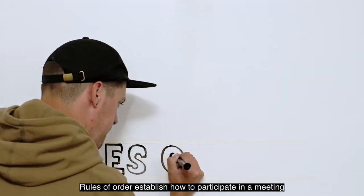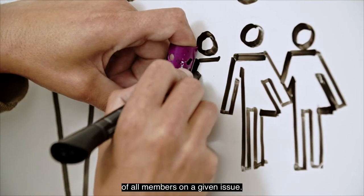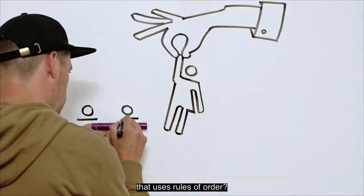Rules of Order establish how to participate in a meeting and how to vote. Their purpose is to balance the rights of all members on a given issue. So what's different about a meeting that uses rules of order?